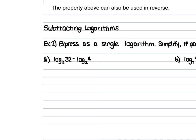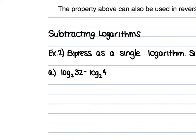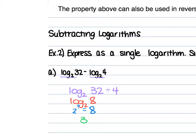For a, we have log₂ of 32 minus log₂ of 4. Our bases are both log₂, so keep the log₂ and do 32 divided by 4. 32 divided by 4 is 8, so log₂ of 8 means 2 to what power is 8? 2 to the 3rd power is 8, so 3 is our answer.